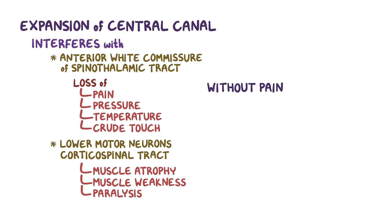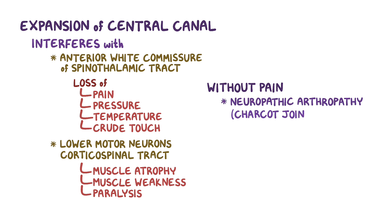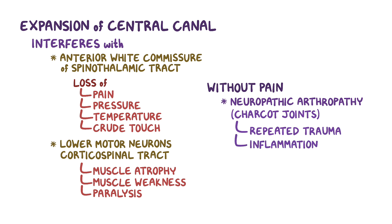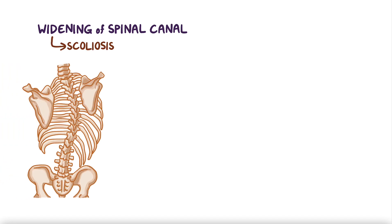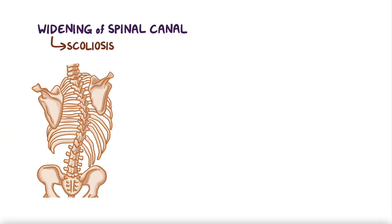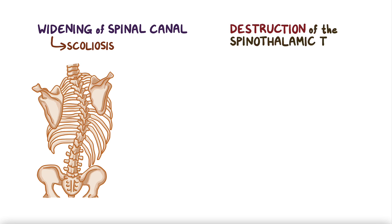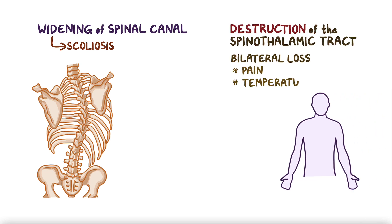Although it sounds nice to not feel pain, this can lead to several problems. One of these is neuropathic arthropathy, or Charcot joints, which is when there's repeated trauma and inflammation in a joint since there's no pain response. In syringomyelia, this is particularly seen in the shoulders. The widening spinal canal can also lead to changes in the spine like scoliosis, which is a sideways curvature of the spine. Classically, the destruction of the spinothalamic tract leads to the bilateral loss of pain and temperature in the upper extremities and back, described as a cape-like distribution, due to damage at the level of the cervical spine, usually C4 to C6.